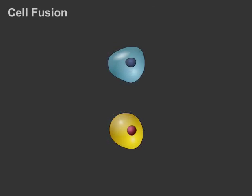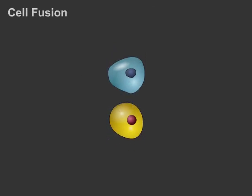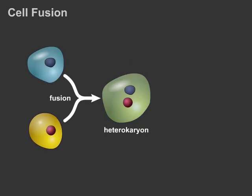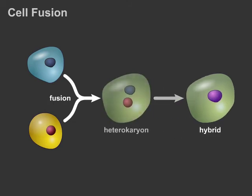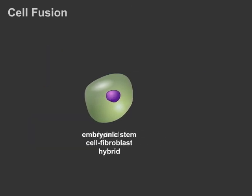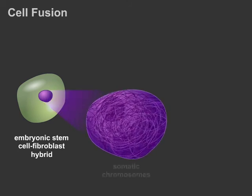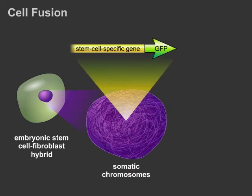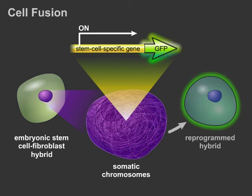Fusion of unrelated cell types has been used to investigate cell plasticity. When two cells are fused, a heterocaryon with two distinct nuclei is formed. In some cases, nuclei from fused partner cells merge, leading to a stable hybrid cell. Hybrids generated from the fusion of embryonic stem cells and fibroblasts can behave like embryonic stem cells. In a small percentage of hybrid cells, stem cell-specific genes that were previously silenced in the somatic cell are reactivated from somatic chromosomes. Reprogrammed cells that display embryonic stem cell morphology, growth, and gene expression have been isolated using a genetic marker that indicates reactivation of stem cell-specific genes.